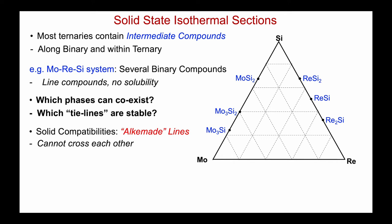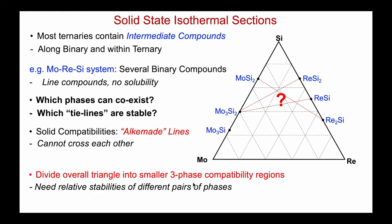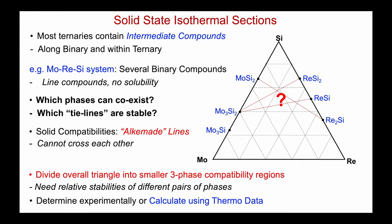So it's possible we could have equilibrium between MoSi₂ and Re₂Si, and if that were the case, other compatibility lines could not cross it. The issue is: how do we resolve what phases are present within the middle of the ternary system? We need to divide the overall triangle into a smaller subset of three-phase compatibility regions, and to do that we need the relative stabilities of these different pairs of phases. We could do that experimentally — making up compositions and analyzing them by X-ray diffraction — or, if thermodynamic data is available, we can calculate the stable Alkemade lines.